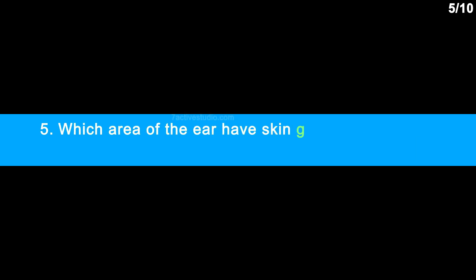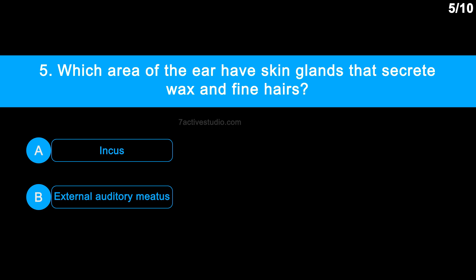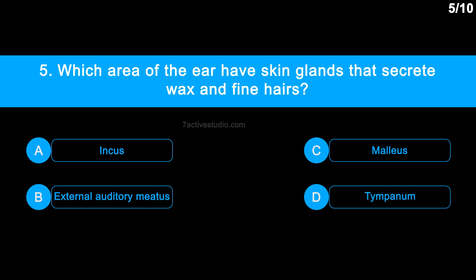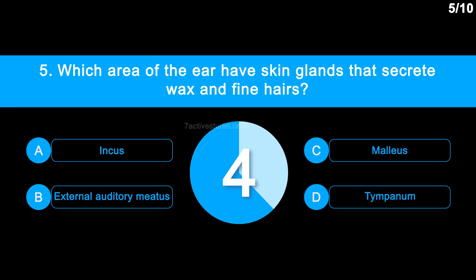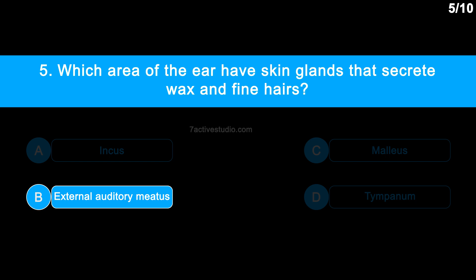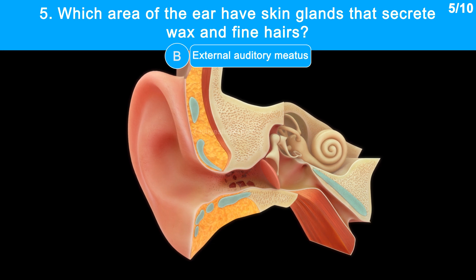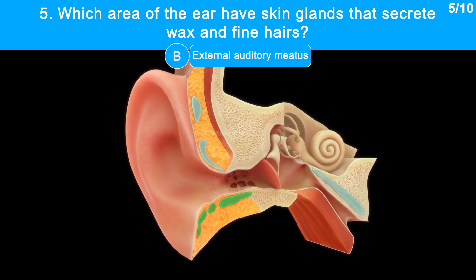Question No. 5: Which area of the ear has skin glands that secrete wax and fine hairs? Option A: Incus. Option B: External auditory meatus. Option C: Malleus. Option D: Tympanum. The correct answer is Option B: External auditory meatus, which has hair and wax-secreting glands in its skin.